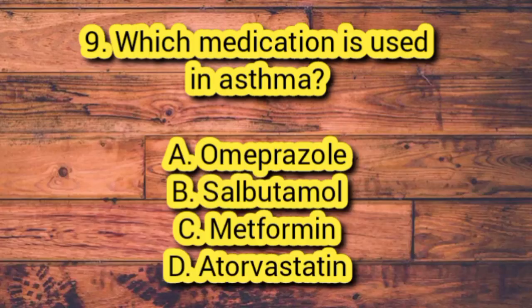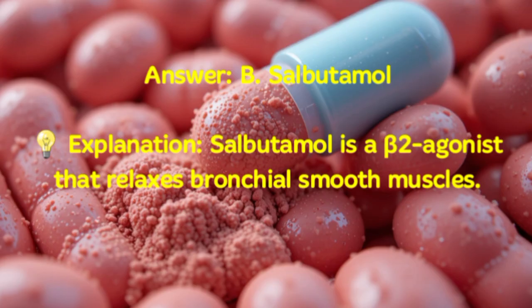Number 9. Which medication is used in asthma? A. Omeprazole. B. Salbutamol. C. Metformin. D. Atorvastatin. Answer: B. Salbutamol. Explanation: Salbutamol is a beta-2 agonist that relaxes bronchial smooth muscles.